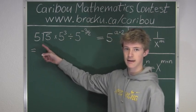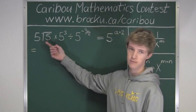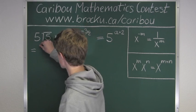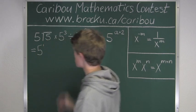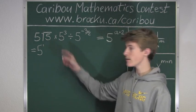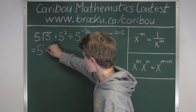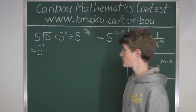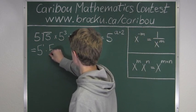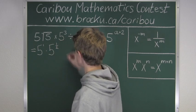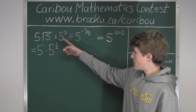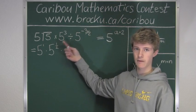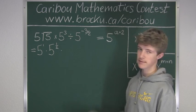We have 5 times a factor, so we can write 5 as 5 to the power of 1. Then we have times the square root of 5, which can also be written as 5 to the power of 1 over 2. Then we have times 5 to the power of 3. Since this is already in the form that we want it, we will just write 5 to the power of 3 again.